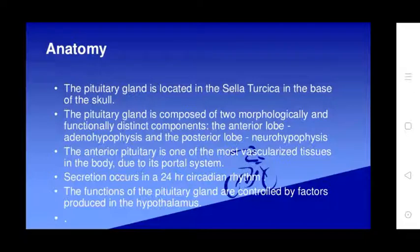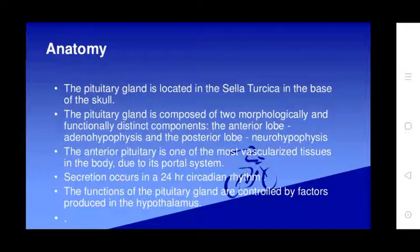The pituitary gland is located in the sella turcica at the base of the skull. It is composed of two morphologically and functionally distinct components: the anterior lobe (adenohypophysis) and the posterior lobe (neurohypophysis). The anterior pituitary is one of the most vascular tissues in the body. Due to a portal system, secretion occurs in a 24-hour cardinal rhythm, and functions are controlled by factors produced by the hypothalamus.